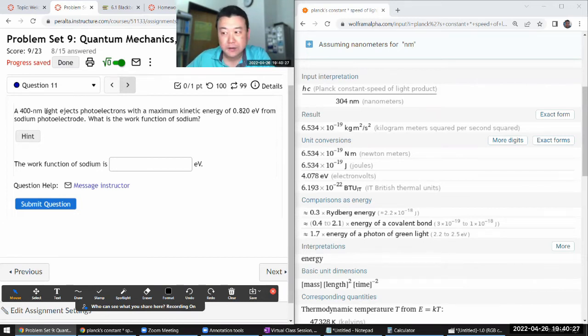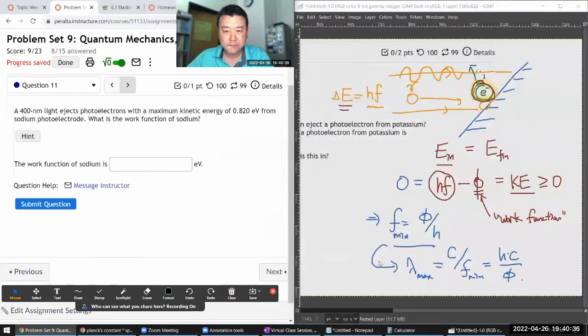So this question is now a little bit more involved. It says the photo electrons with a maximum kinetic energy of that. Okay, that's a little more involved. I think we may have to go back to this expression here.